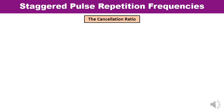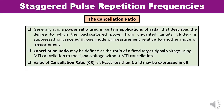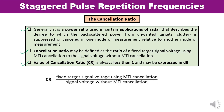Next is the cancellation ratio. It is defined as a ratio used in radar applications that describes the degree to which backscatter power from unwanted targets — that is, clutter — is suppressed or cancelled. It is the ratio of fixed target signal voltage using MTI cancellation to signal voltage without MTI cancellation. The value of the cancellation ratio is always less than 1 and can be expressed in dB.